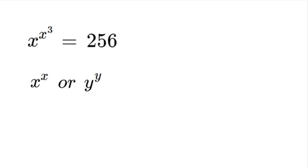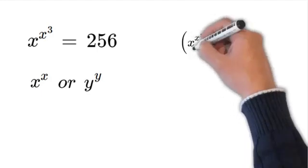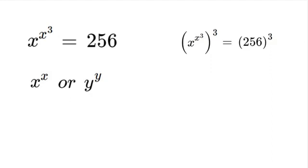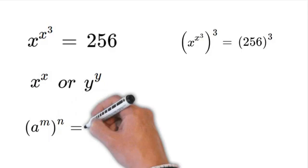So the best way to do that is to put the whole function to the power of 3, and we'll do both sides like that. And once we do that, we can use exponent properties to multiply it out.